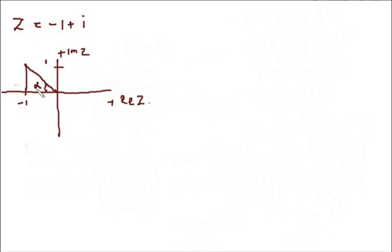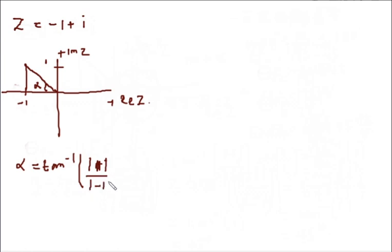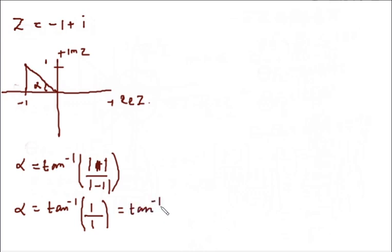Next we find the value of alpha. Alpha equals tan inverse of the absolute value of 1 divided by the absolute value of minus 1, which is tan inverse of 1 divided by 1, equal to tan inverse of 1. So tan inverse of 1 is 45 degrees. Alpha in this case is 45 degrees.